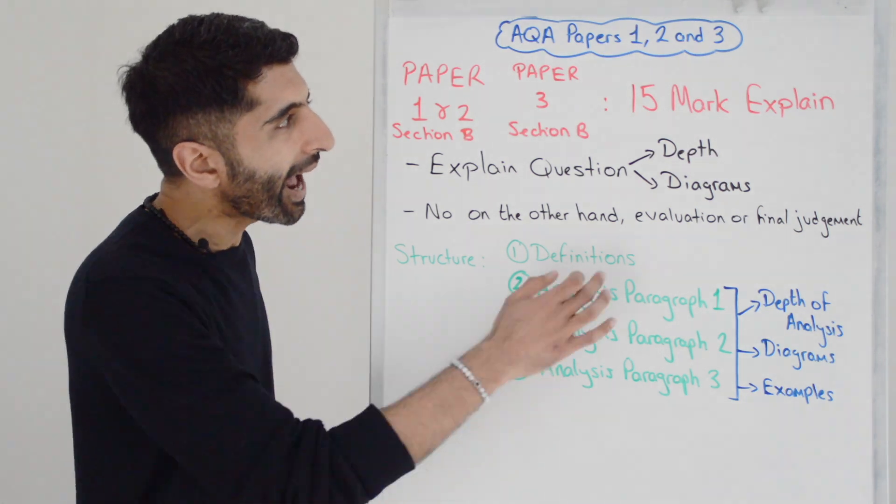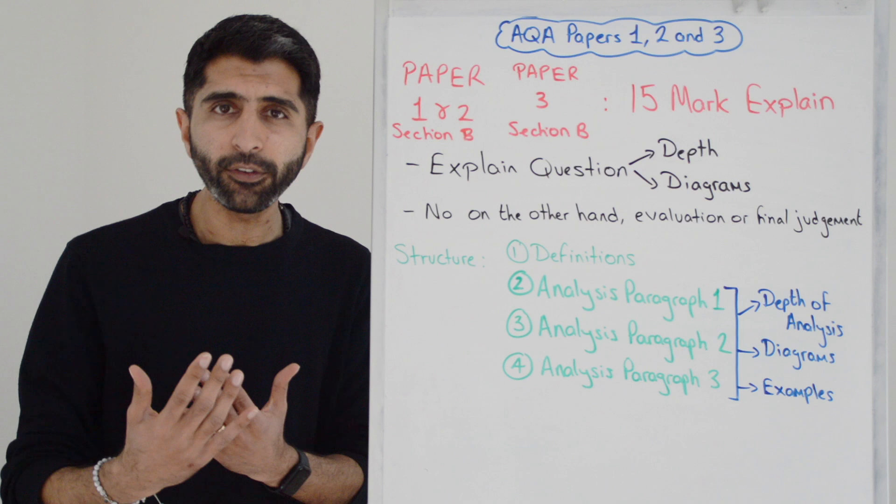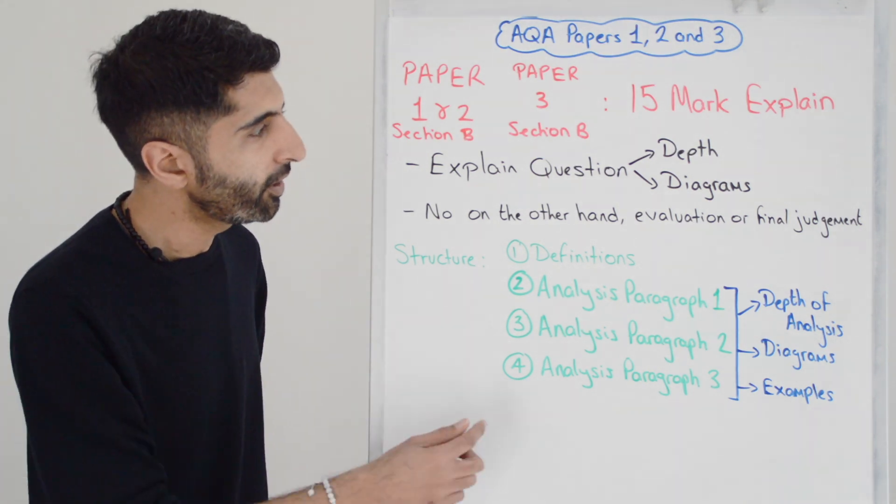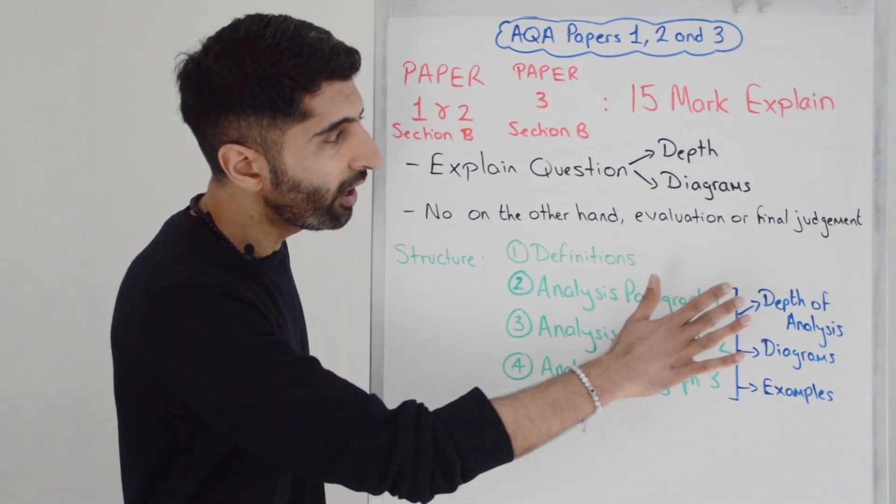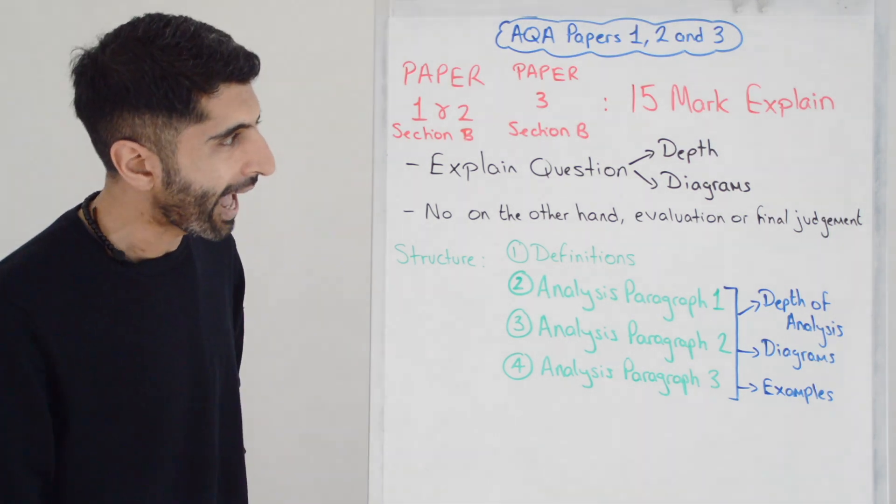Know that on a 15-marker, as an explain question only, you don't need any counter arguments, you don't need on the other hand, you don't need two-sided argument. You don't need any evaluation and you don't need a final judgment or a conclusion. None of that is necessary at all.